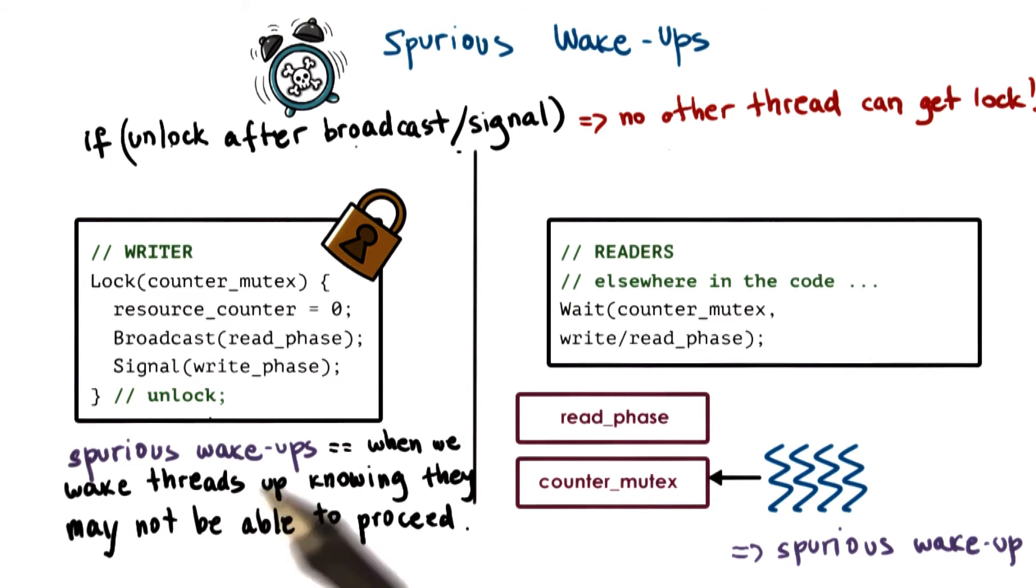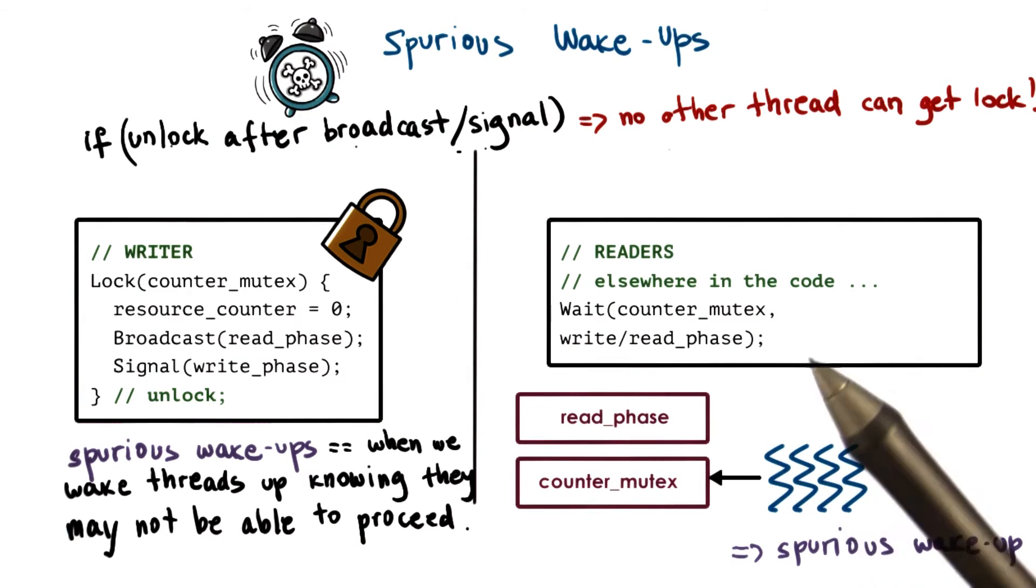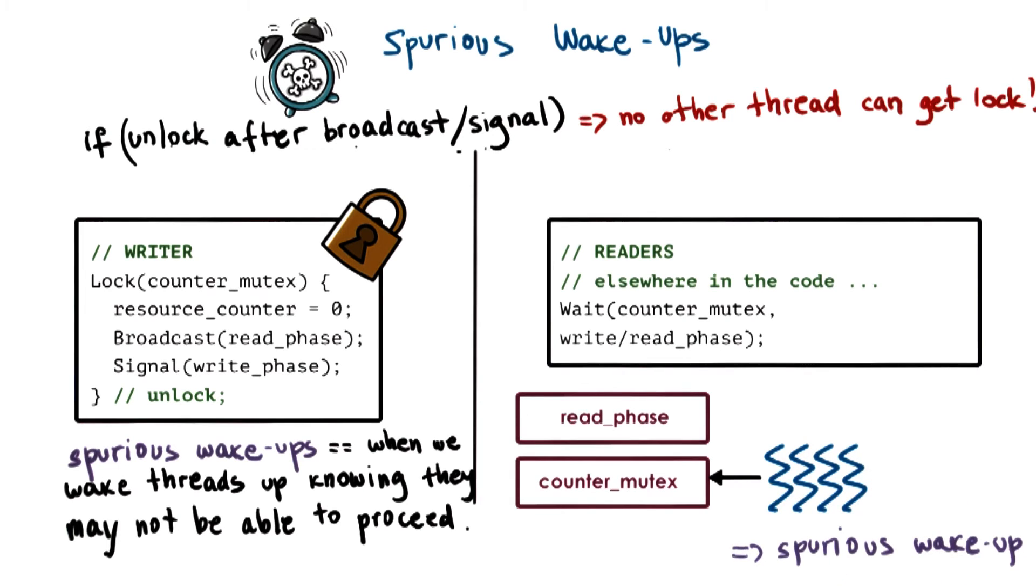So spurious wakeups is this situation when we're waking threads up, we're issuing the broadcast or the signal, and we know that it is possible that some of the threads may not be able to proceed. It will really depend on the ordering of the different operations.